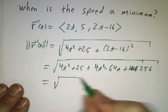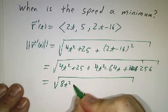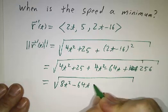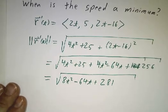And that gives us the square root of 8t squared minus 64t plus 281. It looks complicated,